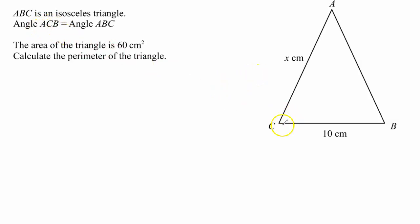Now these are the base angles, angle ACB and angle ABC. So these two angles are equal. All the information is given here. We are given the area of the triangle, that's the space within the boundary, that's 60 cm squared, and we are asked to obtain the value of its perimeter.